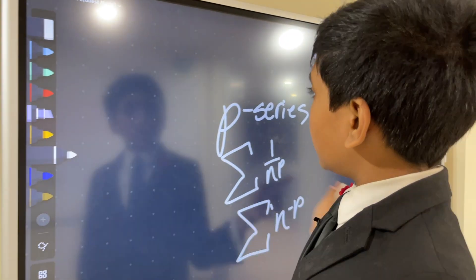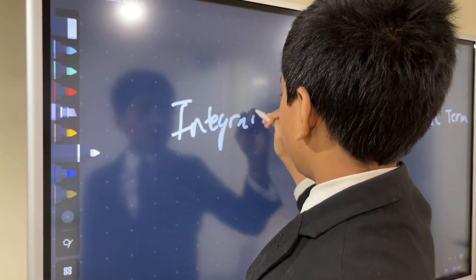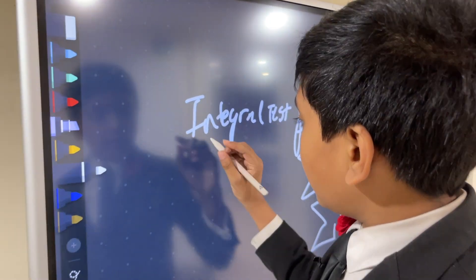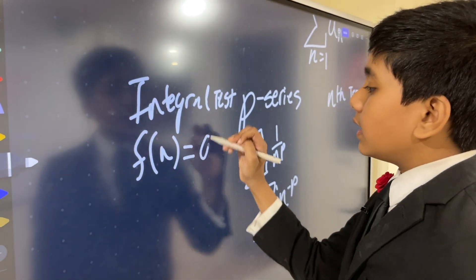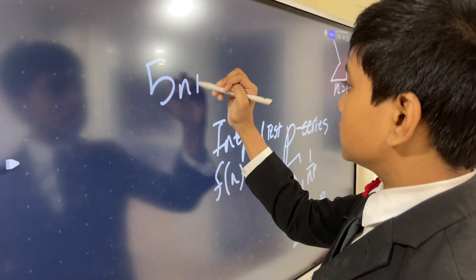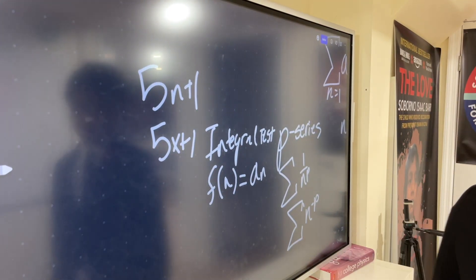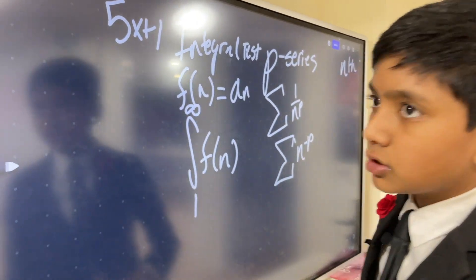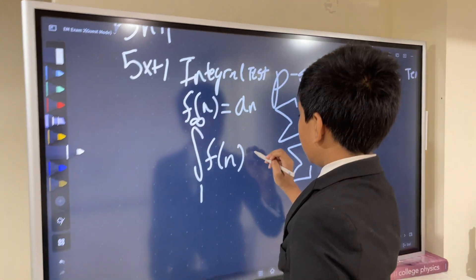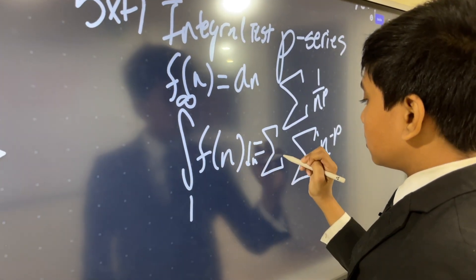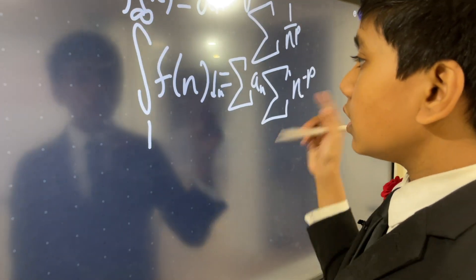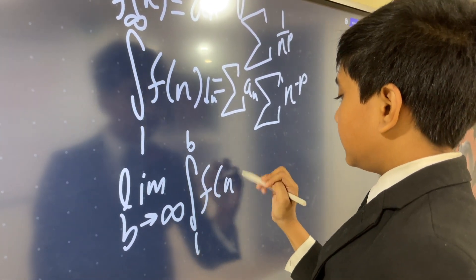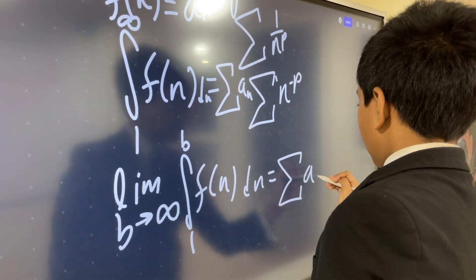There's actually a third test called the integral test that we'll also cover today. The integral test says that if f(n) equals a_n — for example, if a_n = 5n + 1, then f(x) = 5x + 1 — then the integral of f from 1 to infinity, an improper integral, equals sigma a_n. We can write it as the limit as b approaches infinity of the integral from 1 to b of f(n) dn equals sigma a_n.